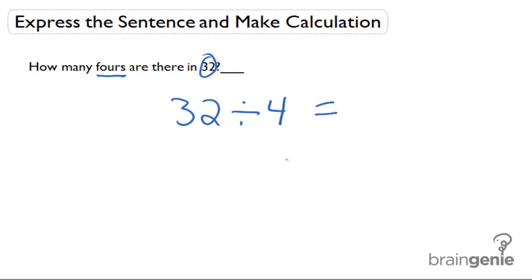We have to think what times four is actually going to get us 32. Four times eight is actually going to get us 32.